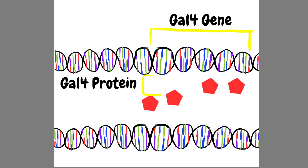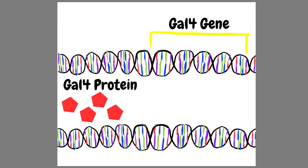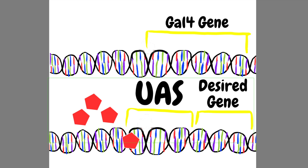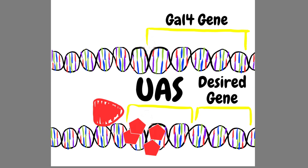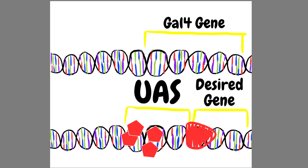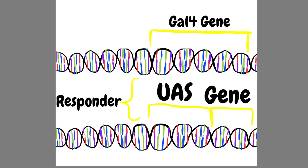When the GAL4 gene gets expressed, the resulting GAL4 proteins float around until they find a UAS enhancer in front of some gene that you want expressed in the DNA. The GAL4 proteins then attach to the UAS, which, through a series of other events, attracts an RNA polymerase to speedily begin the process of gene expression for whatever gene comes after the UAS. The sequence with the UAS and the gene is called the responder sequence.